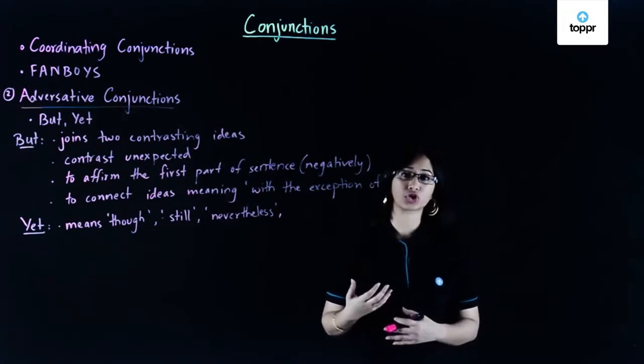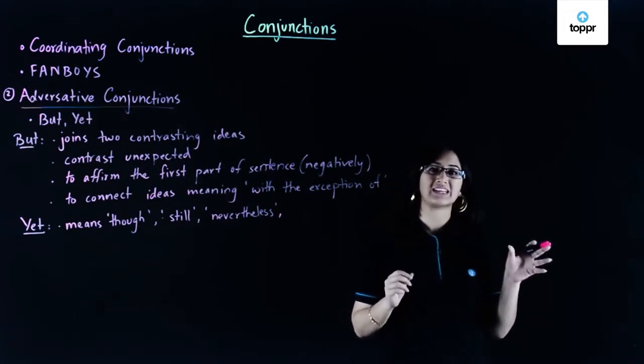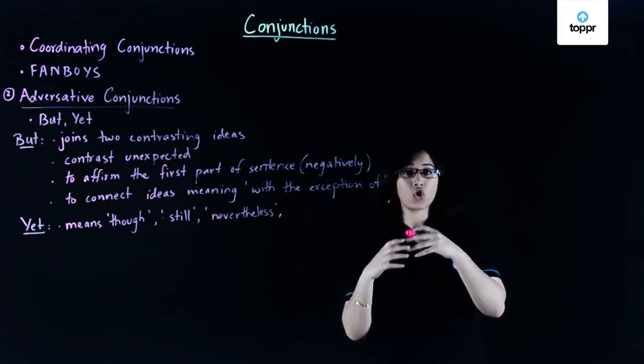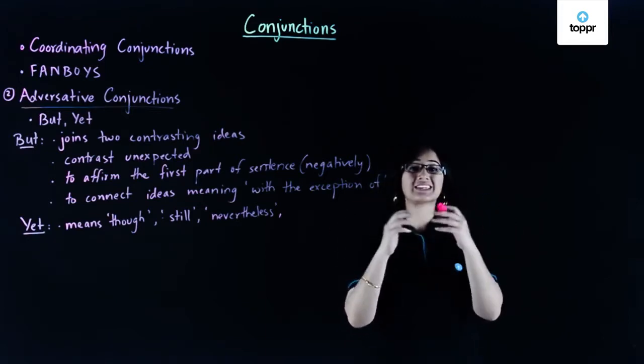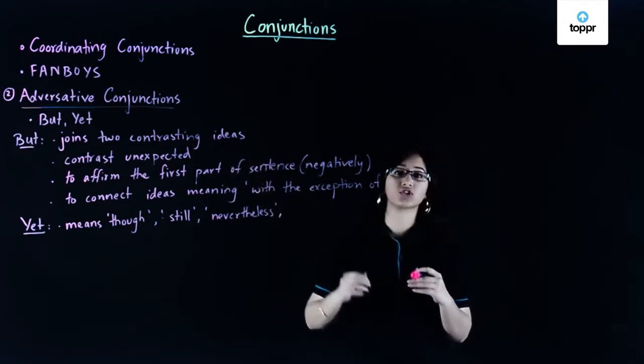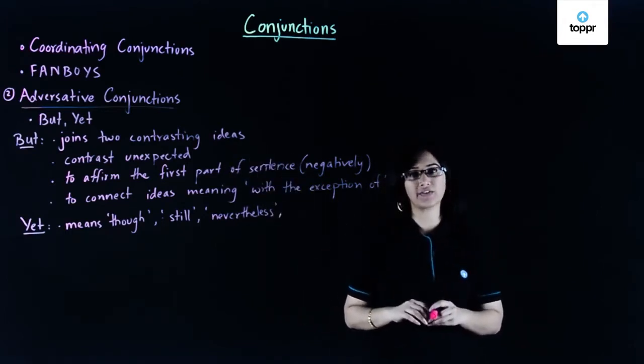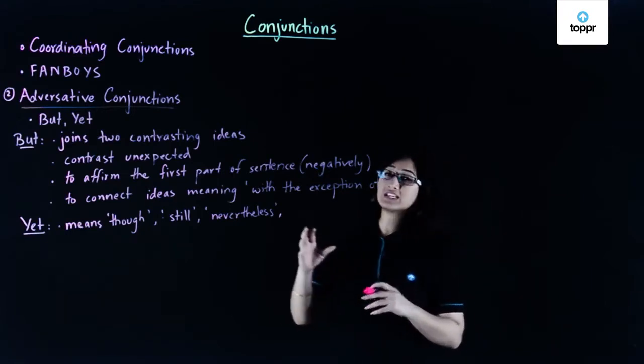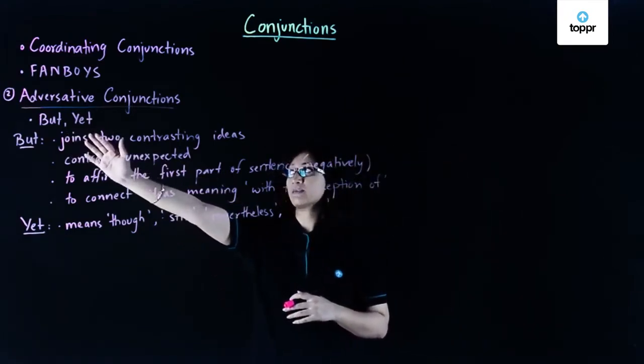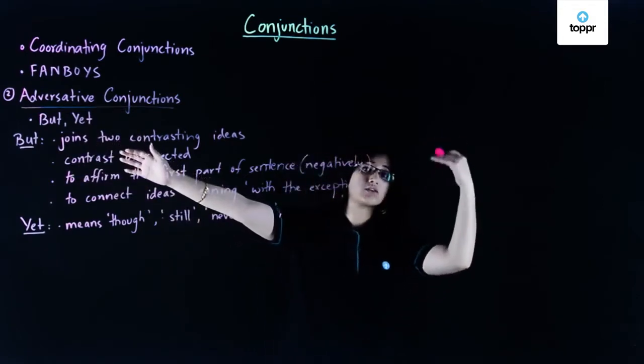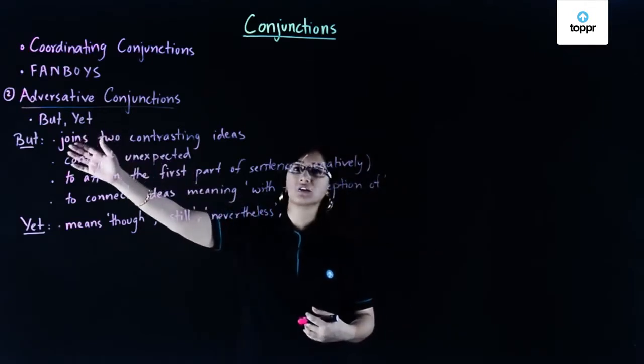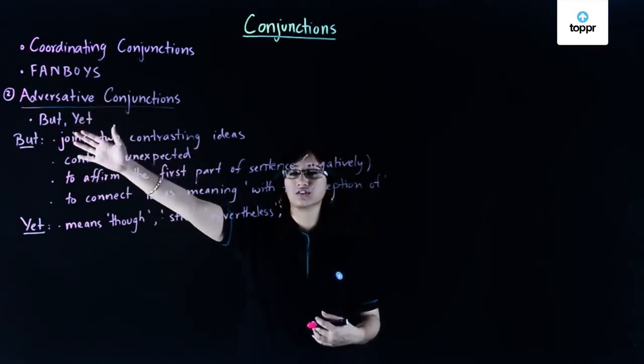Whenever we want to show that one statement is in contrast to another statement in a sentence, or when we want to show contrasting ideas in a sentence, then we use adversative conjunctions in order to connect them together. Examples of these sorts of conjunctions include but and yet. So remember we saw the FANBOYS coordinating conjunctions—out of those, but and yet fall under adversative conjunctions.